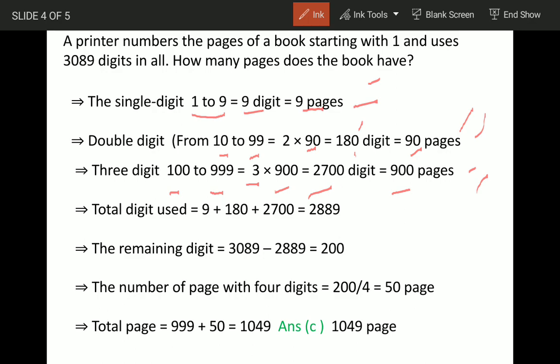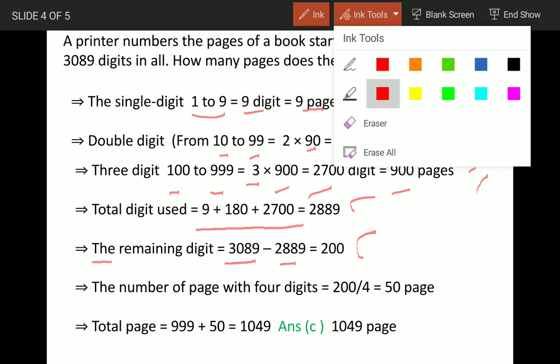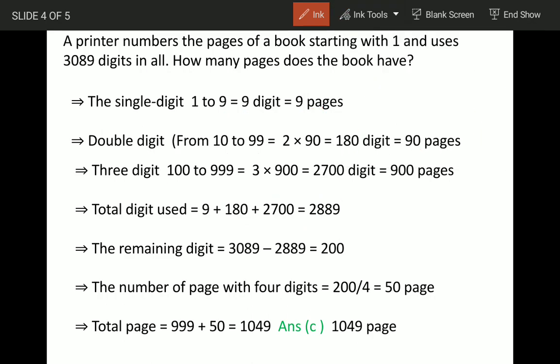So how many digits have been used so far? 9 plus 180 plus 2700 - that is 2889. So how many digits are balanced now? Total used are 3089 minus 2889, so we get 200. So after 999 the digits are going to be 4 in each number.